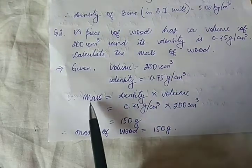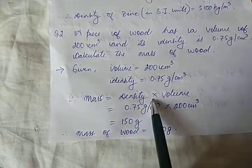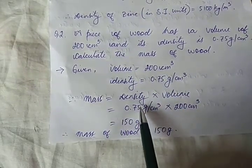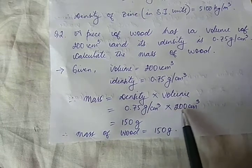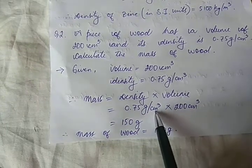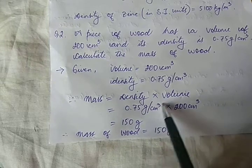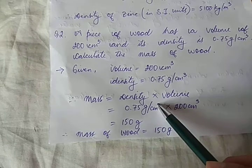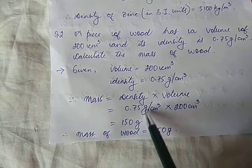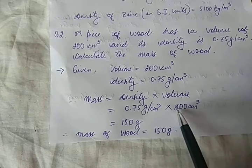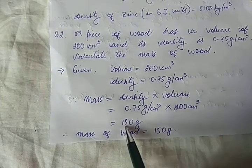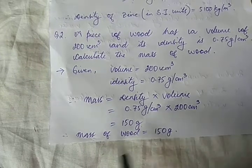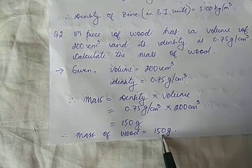Given: volume = 200 cm³, density = 0.75 g/cm³. Mass equals density into volume, so mass = 0.75 g/cm³ × 200 cm³. The cm³ units cancel out, leaving only grams. 0.75 × 200 = 150 grams. So, the mass of the wood is 150 grams.